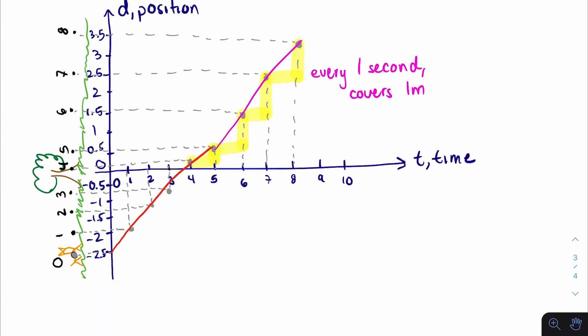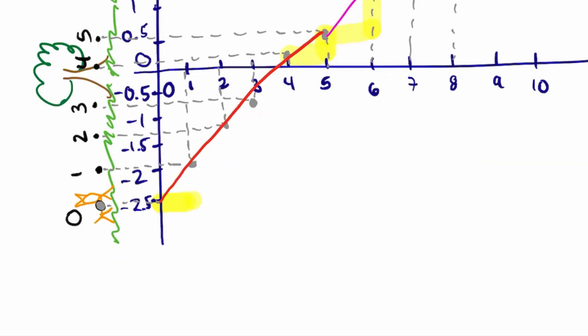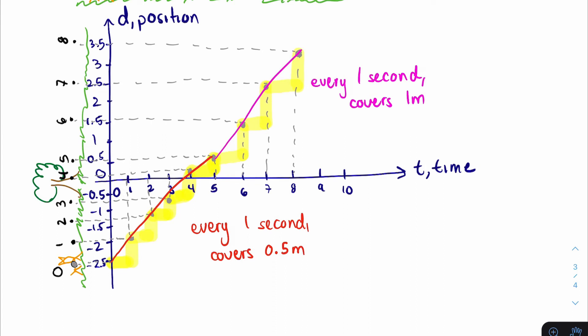So for the pink line, for every 1 second of time, it covers 1 meter of distance. Let's see what's going on for the red line. In 1 second, it covers roughly 0.5. In the next second, 0.5. In the next second, 0.5. But we can approximate it at 0.5. And then from 4 to 5, 0.5. So here we have another relationship for the red line. So for the red line, every 1 second of time that goes by, the cheetah is able to cover 0.5 meters worth of distance.